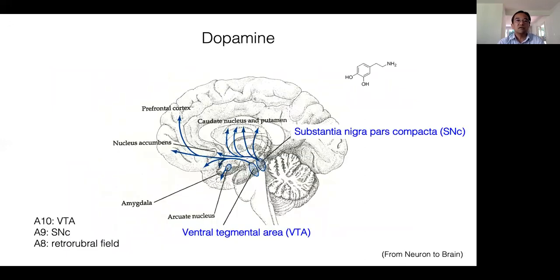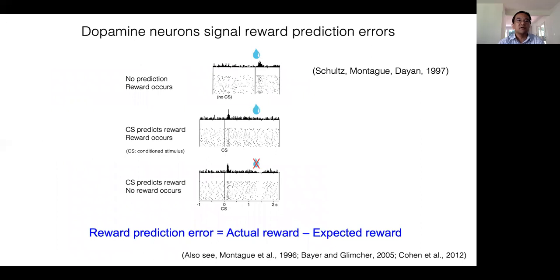Dopamine neurons are located in the midbrain nuclei called the ventral tegmental area and the substantia nigra pars compacta and send long axons to wide areas of the brain. One of the influential ideas in the field is that dopamine neurons signal reward prediction errors or the difference between the actual and predicted reward.